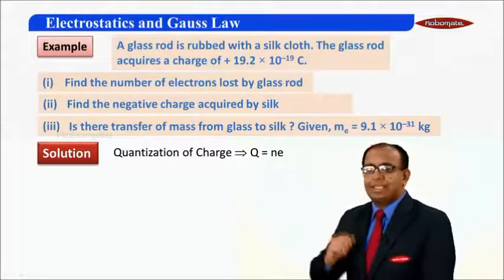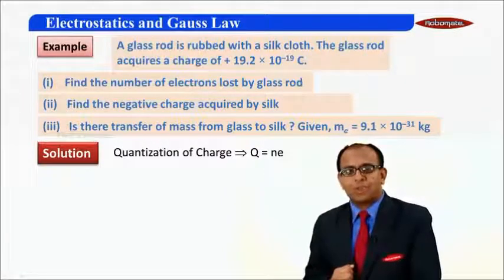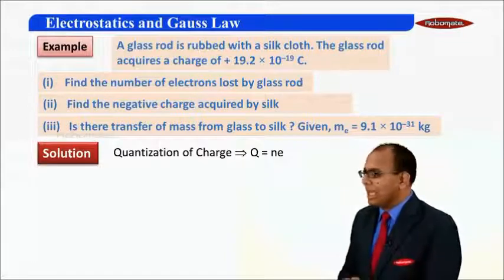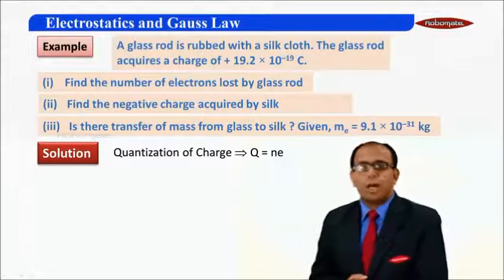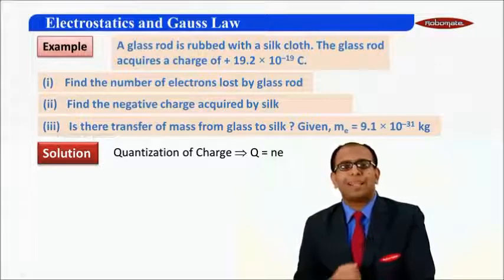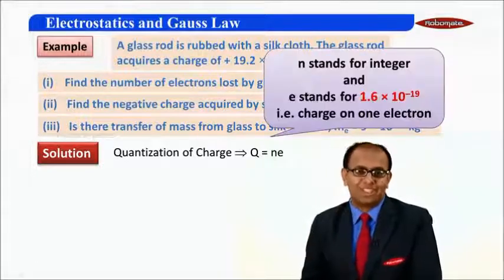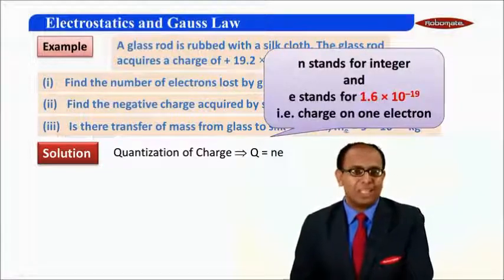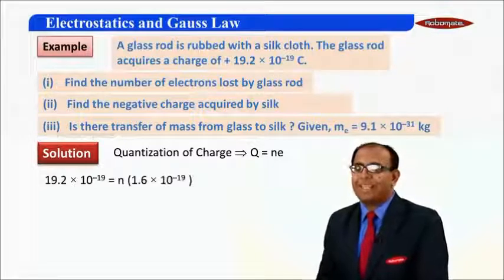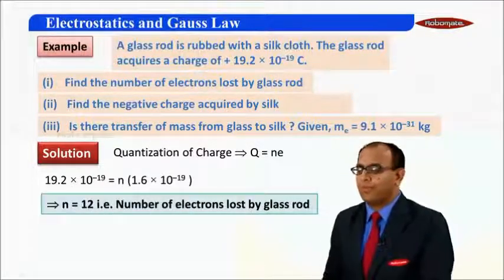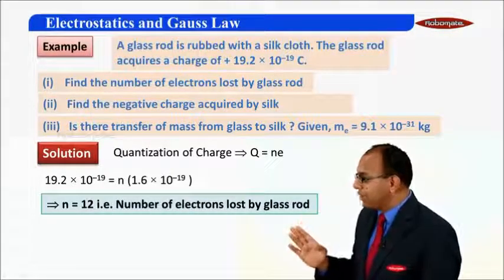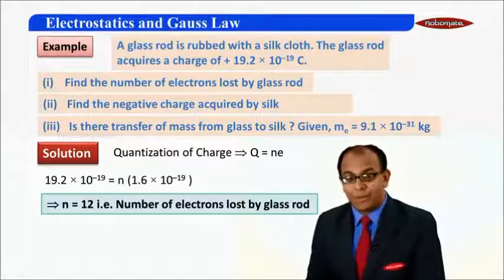We know capital Q is 19.2 × 10⁻¹⁹ coulomb. We know small n is an integer and e is 1.6 × 10⁻¹⁹ coulomb, that is the charge on one electron. Applying the values, we get the value of small n to be 12. That is, 12 electrons are lost by the glass rod.